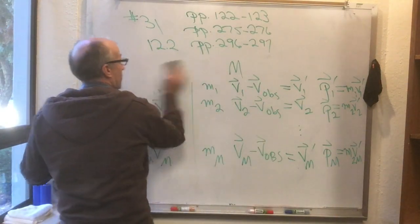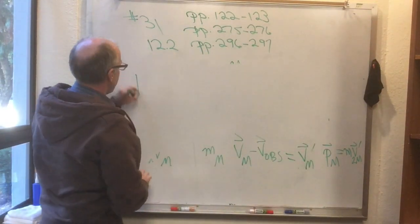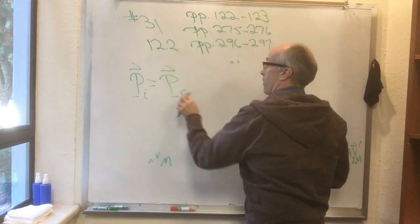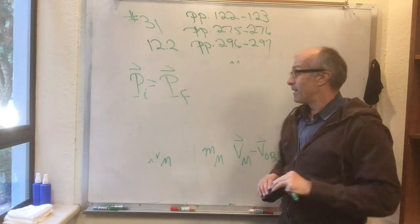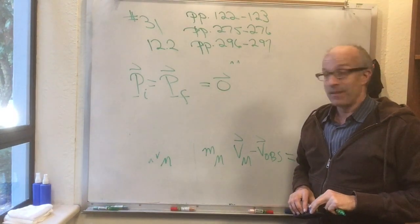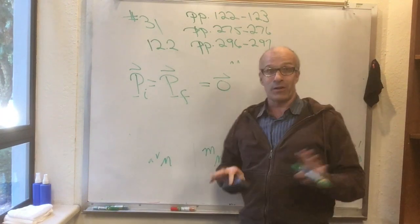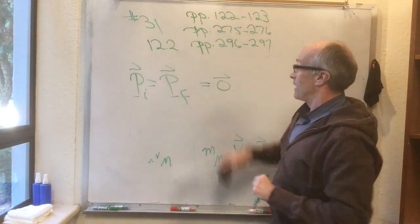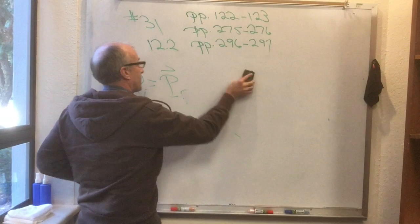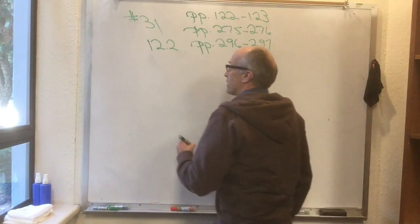In the center of mass frame, all sorts of good things happen. Instead of just P_initial equaling P_final (conservation of total momentum), in this frame P_initial equals P_final equals zero. Not just P_final minus P_initial equals zero — both P_initial and P_final are individually zero. The special thing about this frame is that the total momentum is zero. To construct it, you go to Knight section 12.2, where he calls this frame the center of mass frame and here is how he constructs it.